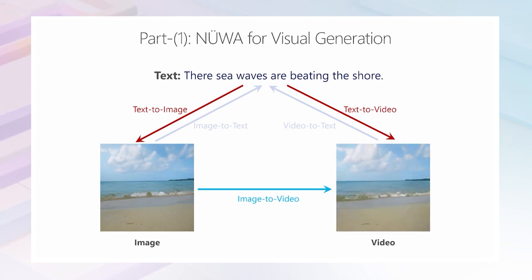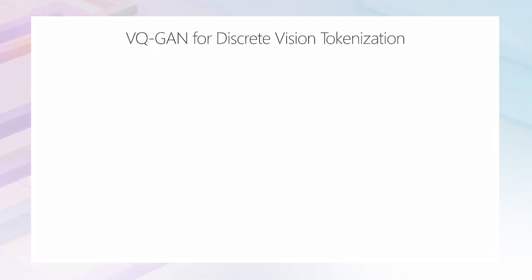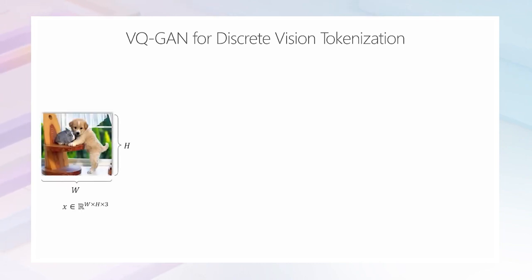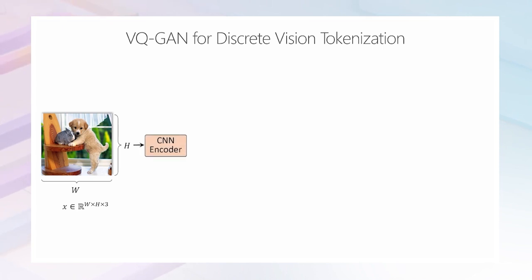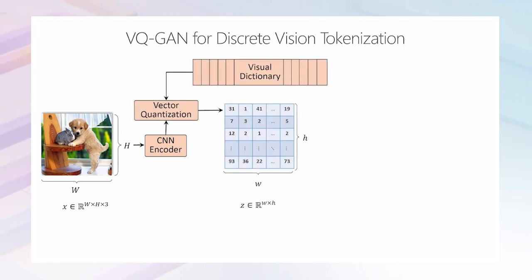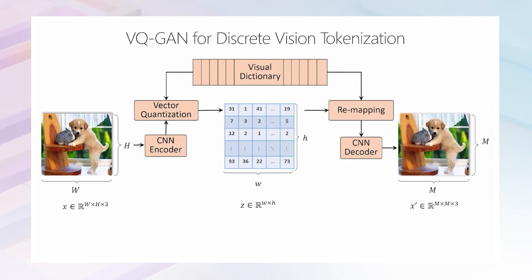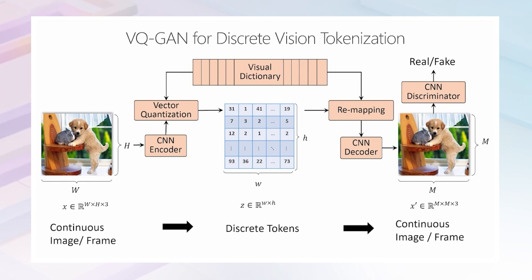In the first part, we focus on visual generation — that is, controllably generating images or videos. To generate images or videos with several frames, we use VQGAN to preprocess them first. An input image X of size W×H×3 is encoded by a CNN encoder, then with a learnable visual dictionary, the encoded features are quantized into discrete tokens of smaller size w×h×3. These discrete tokens are remapped and fed into a CNN decoder to reconstruct the original image, and a CNN discriminator determines whether the image is real or not. In summary, VQGAN converts between continuous images and discrete tokens — we can view it as a visual tokenizer of visual information.